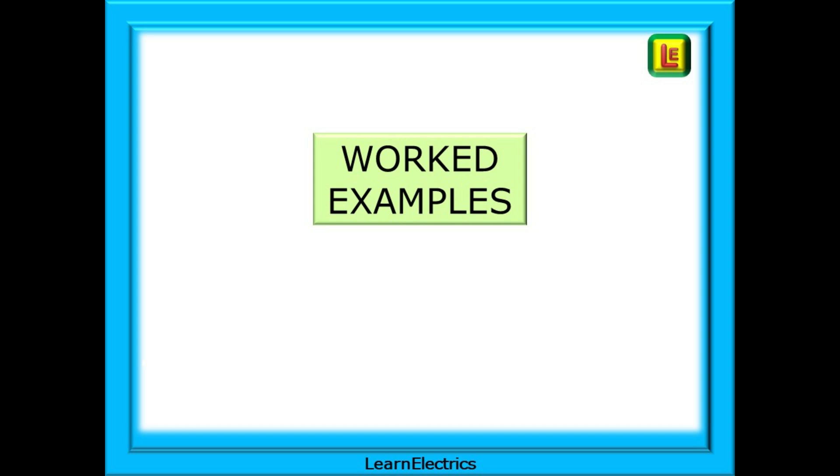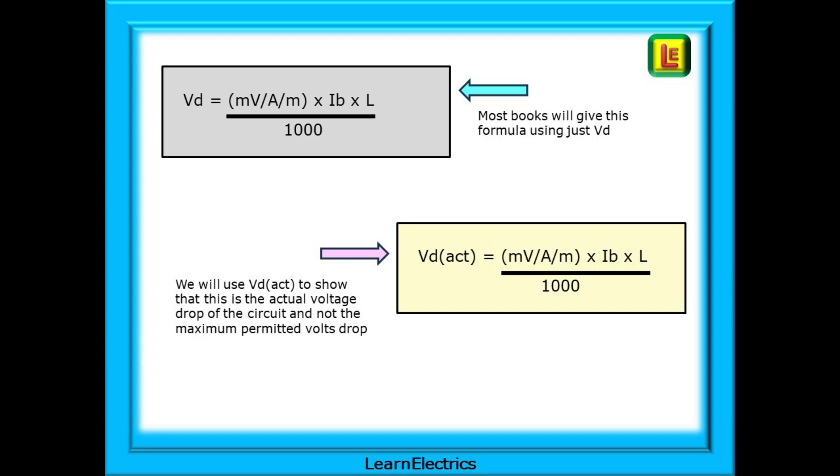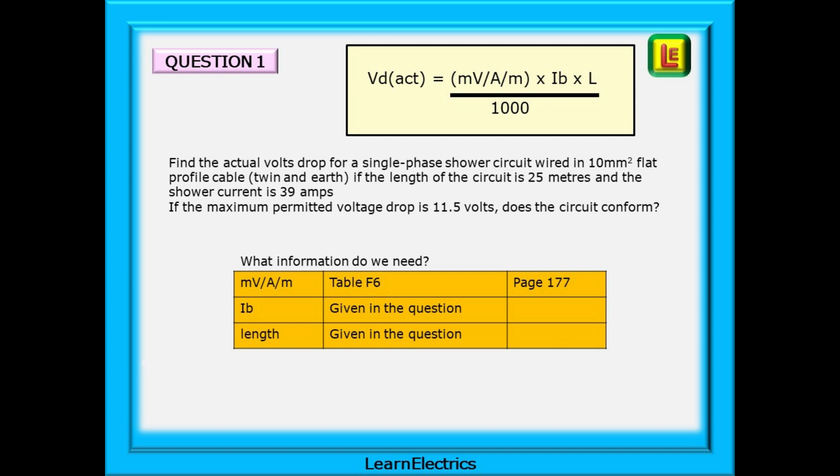Let's have some worked examples now to reinforce our understanding. Most books will give this formula using just VD but it's easy to become confused. Are we dealing with the actual volts drop or the maximum volts drop? As I mentioned before, I avoid this by using VD(act) to show that this is the actual volts drop of the circuit and not the maximum permitted volts drop. Question 1 asks us to find the actual volts drop for a single phase shower circuit wired in 10mm flat profile cable or twin and earth. If the length of the circuit is 25 meters and the shower current is 39 amps, if the maximum permitted voltage drop is 11.5 volts, does the circuit conform to regulations?